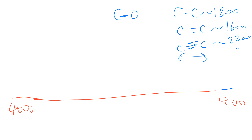These are approximate numbers — you may see slightly different values in the lab manual or textbook, which is why a tilde sign is used. The C=O double bond shows a peak around 1700. The pattern holds: double bond wave number is greater than single bond wave number.